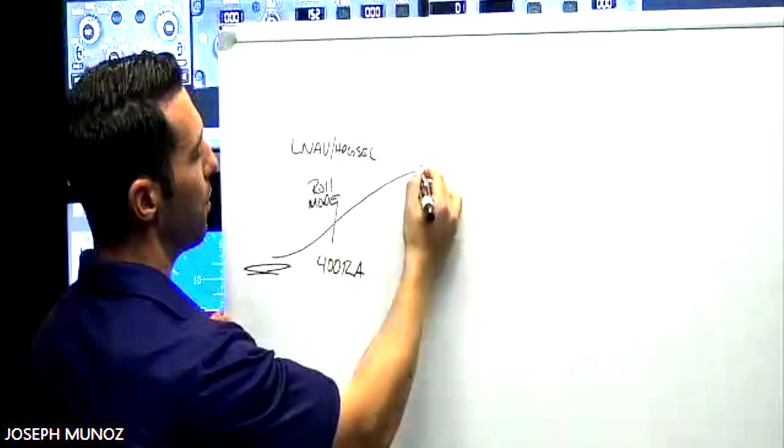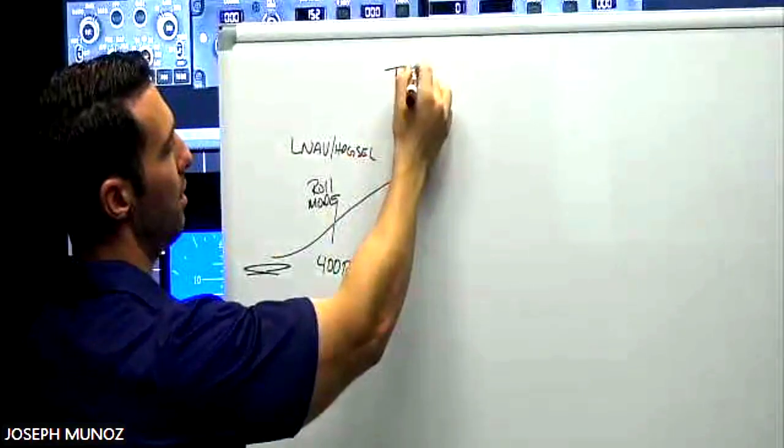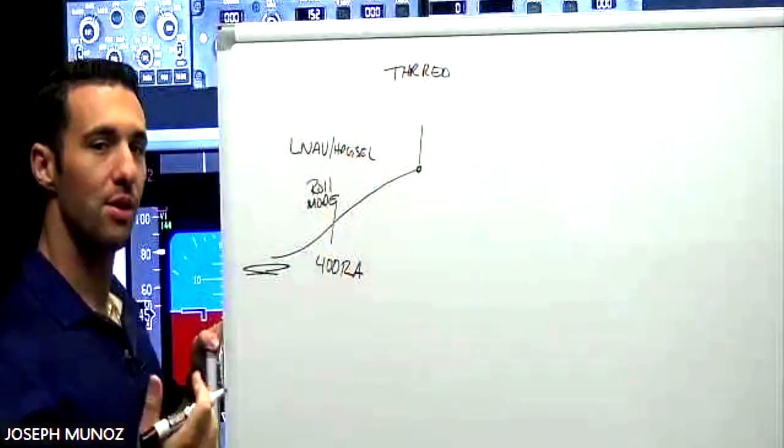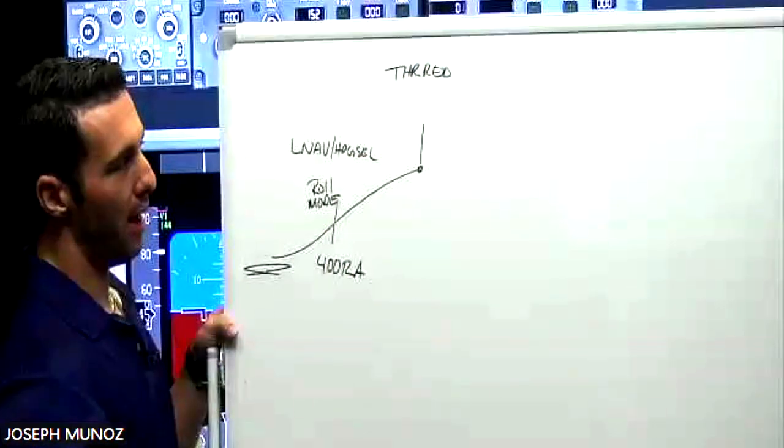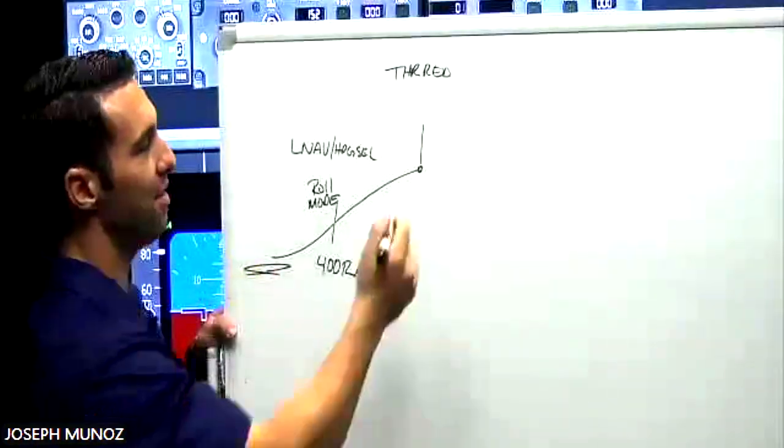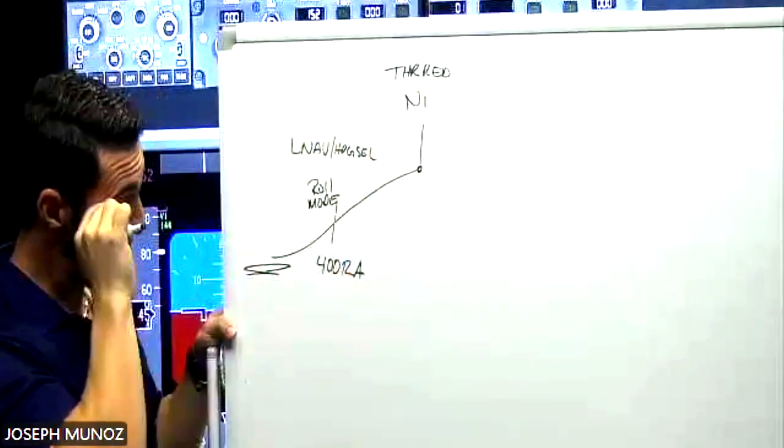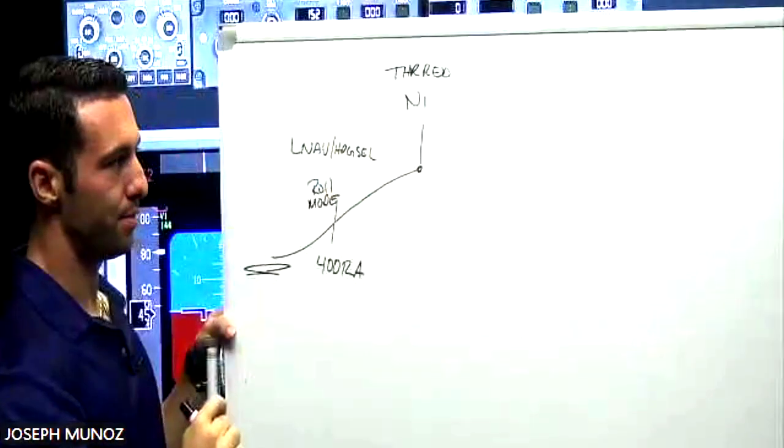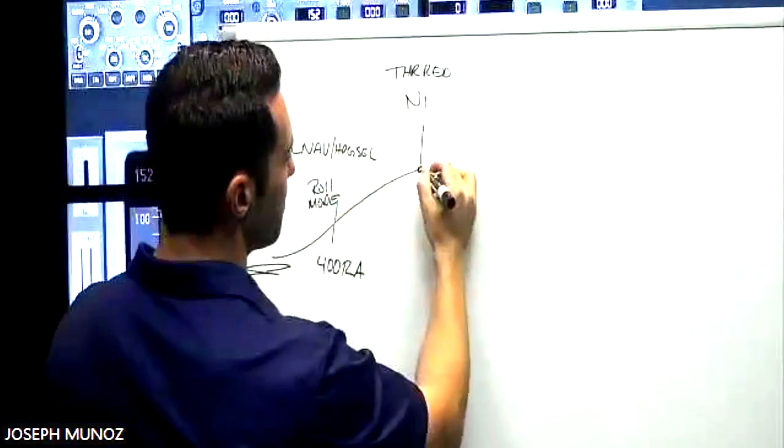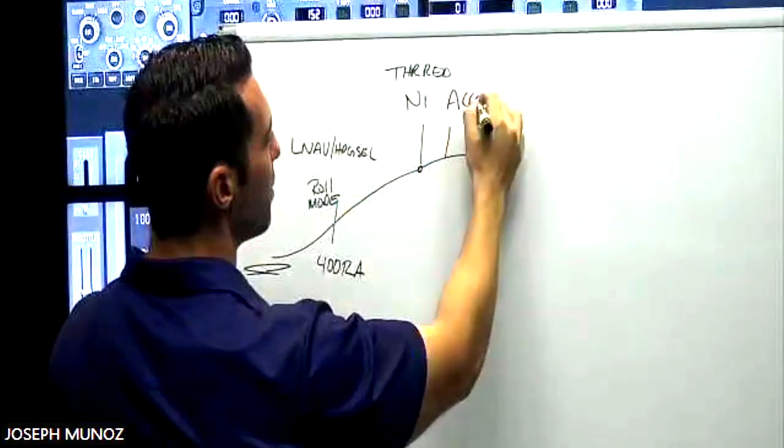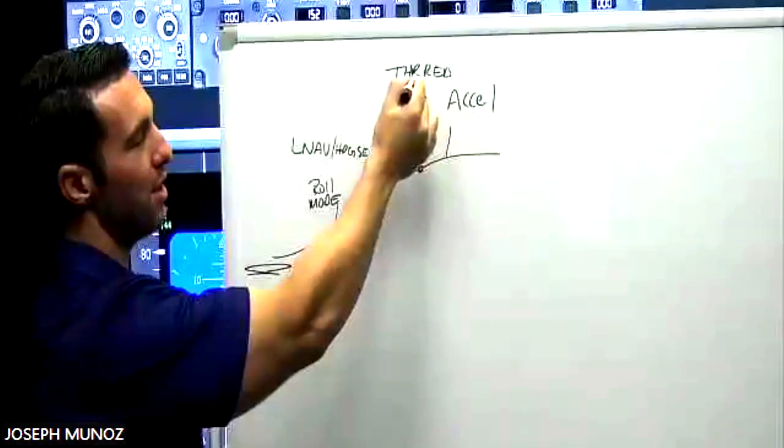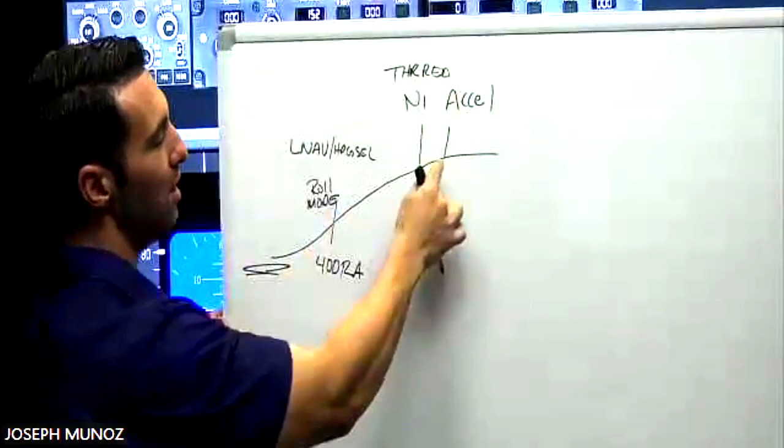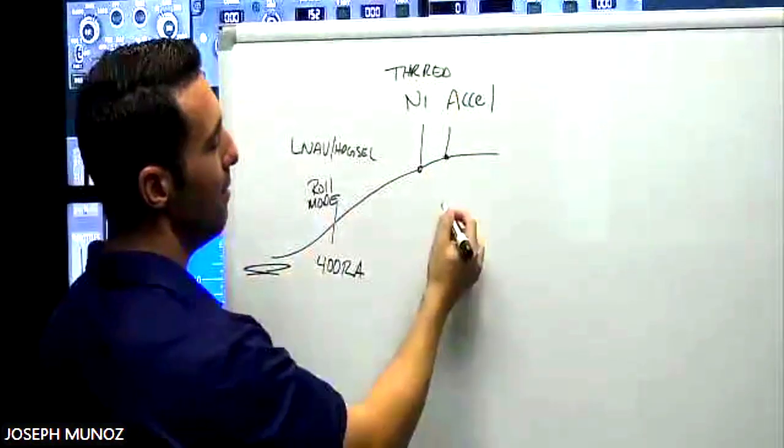Then we're going to get to what's referred to as the thrust reduction altitude, commonly abbreviated thrust red. That's where we're going to reduce thrust from the takeoff thrust setting to the climb thrust setting. The way we do that is there is a button on the mode control panel that says N1. So you're going to actually push, well, if you're the pilot flying, you're going to call for N1. When we reach the acceleration altitude, which most times the thrust reduction and the acceleration altitude are coincident together, not always, but usually, and certainly in training they are, we're going to set the flaps up speed.